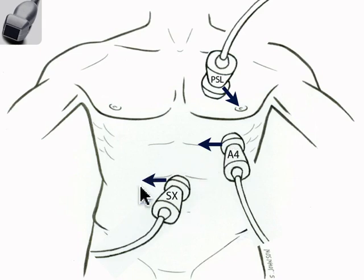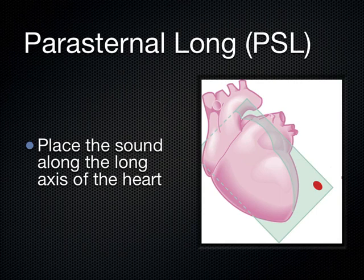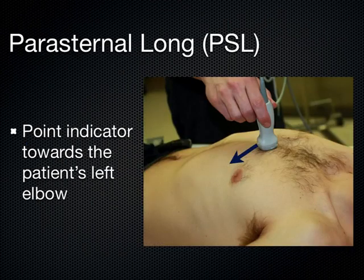We're not going to be talking about the sub-xiphoid view in this talk — we will in the future, but not for this specific talk. Now in the parasternal long axis, you're going to place the probe along its longest axis. I don't say show me a sagittal or transverse view of the heart because the heart runs in an oblique plane — a sort of cattywampus plane across the body. That's why we describe it in terms of its axis rather than its plane: parasternal long axis, or parasternal short axis if we turn it the other way.